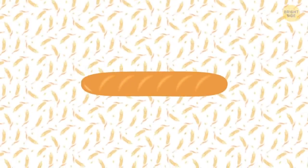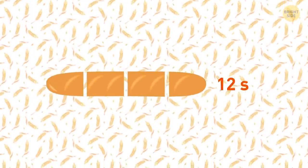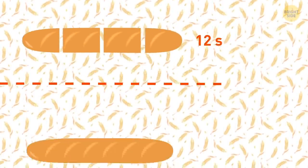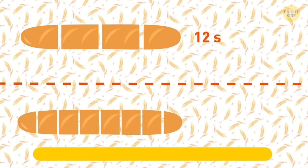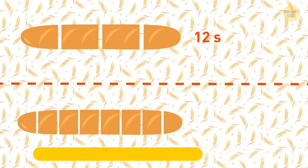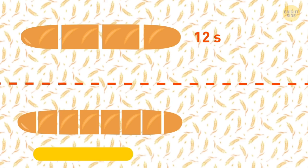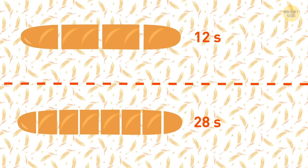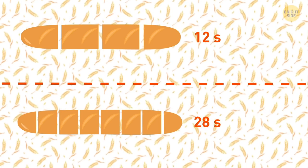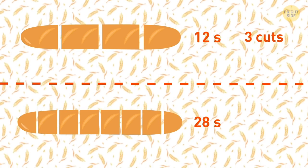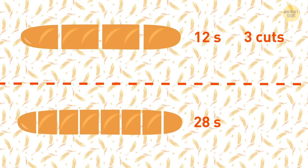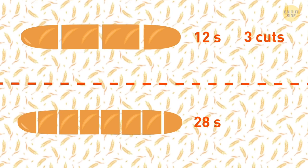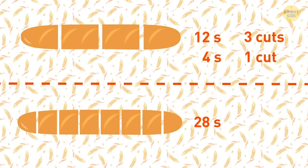Yvonne cuts one baguette into four pieces in 12 seconds. How much time will she need to cut the same baguette into 8 pieces? 28 seconds. To cut a baguette into 4 pieces, she must make 3 cuts. If it takes her 12 seconds to make 3 cuts, it means that she makes 1 cut in 4 seconds.